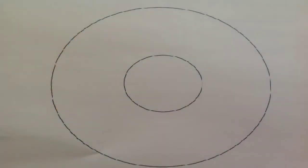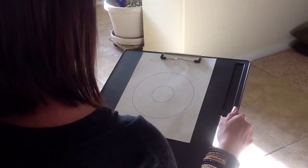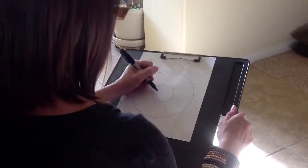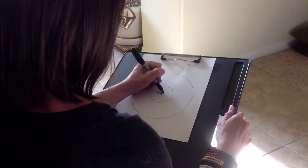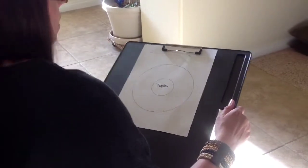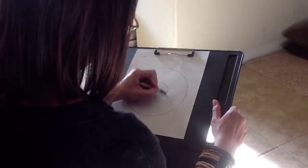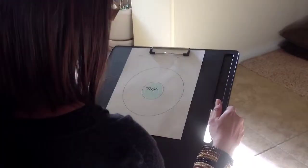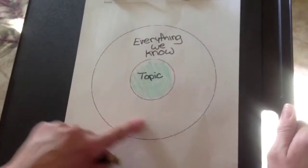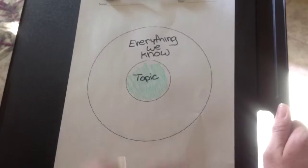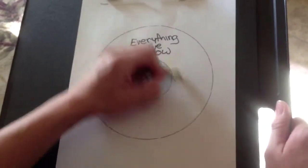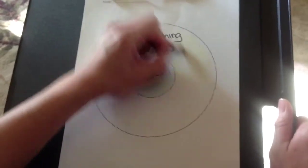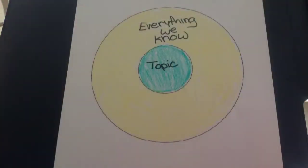A circle map is made up of two circles — one small circle in the middle and then the larger outside circle. Inside the small circle is where you are going to write your topic. That's what we're going to be talking about. We're going to color the small circle green. The big circle is where we will put everything we know about the topic. We're going to color the big circle yellow. Here is what your circle map should look like when you are done — we have the topic colored in green and everything we know about the topic colored in yellow.